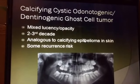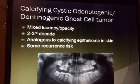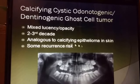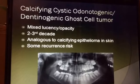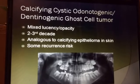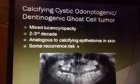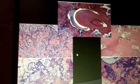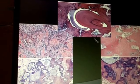The calcifying odontogenic or dentinogenic ghost cell tumor is an interesting lesion, somewhat analogous to the calcifying epithelioma in the skin. It does have some recurrence risk. It can occur in the maxilla or mandible and is usually a mixed lucent and opaque type of tumor. It has dense calcifications and seems to form dentin, almost a small vestigial tooth formation. It is a very densely calcifying and fibrotic, not very cellular tumor.